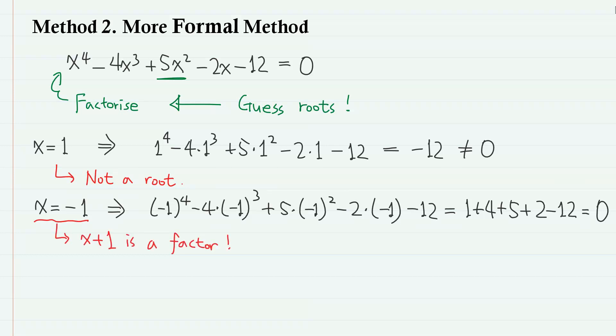This means that the left-hand side has x plus 1 as a factor, so it can be factorized as x plus 1 times something equals 0. In order to find this something, we need to divide this left-hand side with x plus 1. And we can use synthetic division for that.